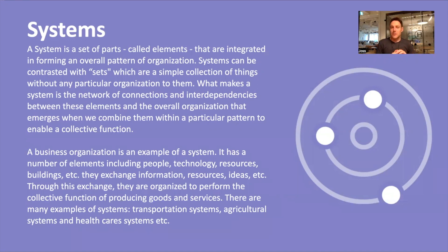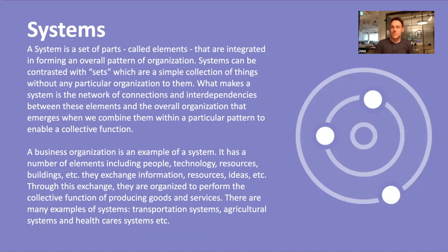A business organization is one example — many people, technology, resources, many different elements all interrelated and interdependent in many ways to perform an overall function: delivering a product or service. Many other examples include transport systems, the human immune system, healthcare systems, food systems, and so on.